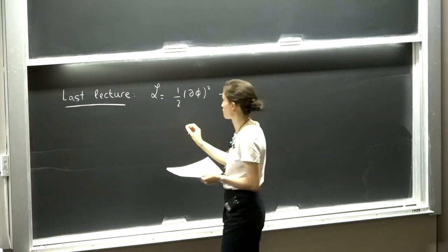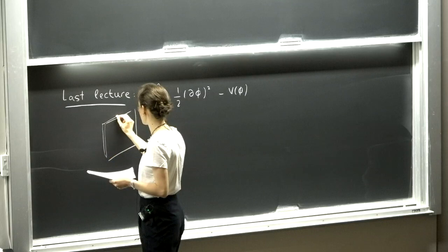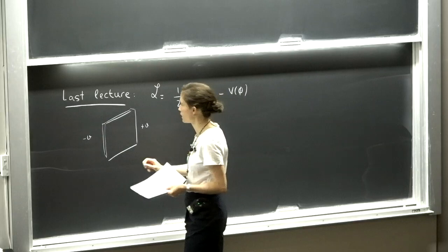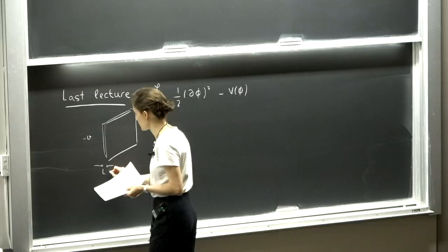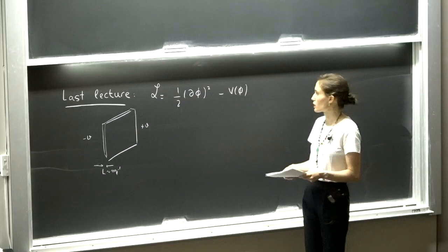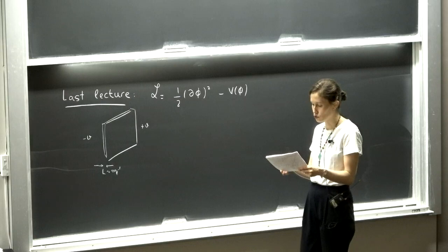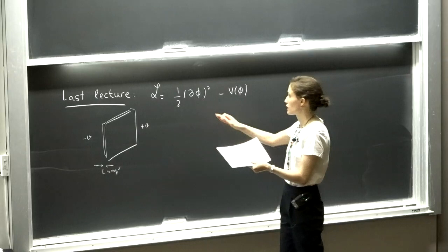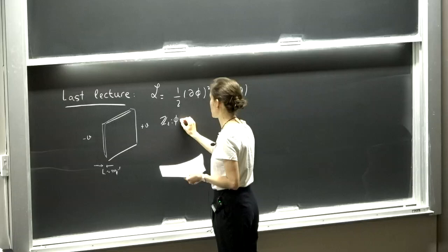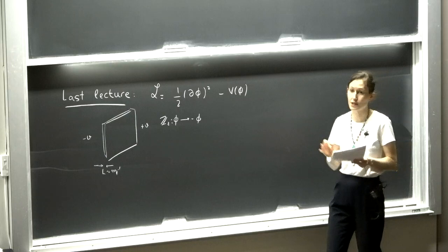We looked at the particular example of a global C2 symmetry, and we argued our way to the existence of certain field configurations that are two-dimensional, that separate the two vacua related by the C2 symmetry, and are characterized by a region of size L set by the quantum wavelength of the relevant particle in this theory, and with a certain characteristic tension set by the scale of spontaneous symmetry breaking.